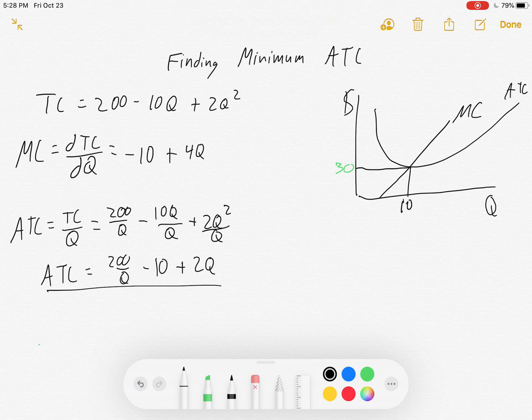One thing we can do is we can take the derivative of this average total cost function, and we can find the point where the slope is 0. You see, to the right of that, the slope is going to be positive. It's going up. And to the left of it, the function is decreasing, and so the slope is negative. But if we set the slope equal to 0, that should give us the same Q.